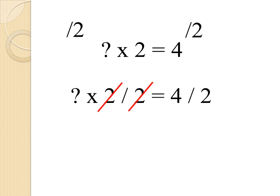The 2's cancel each other out. They turn into 1, since it's 2 divided by 2. And I'm left with question mark equals 4 divided by 2, which I can solve for question mark equals 2.